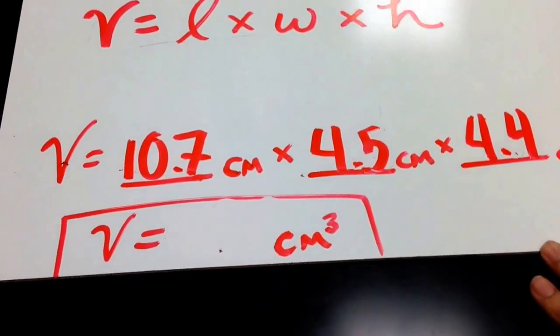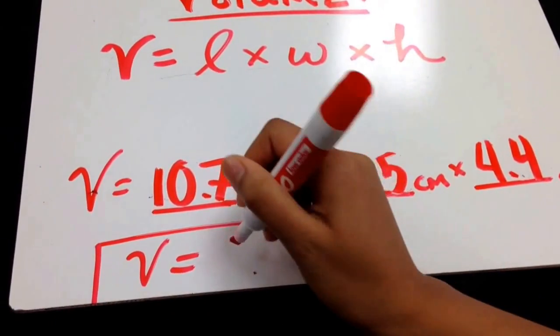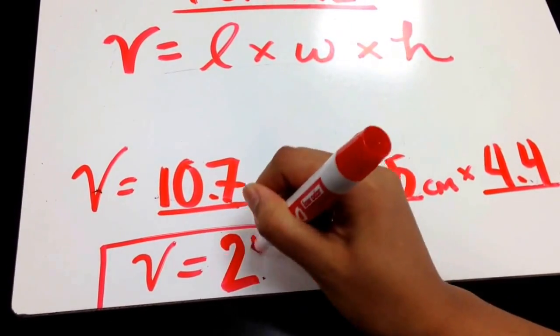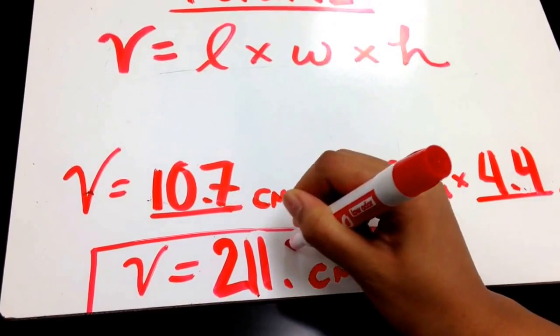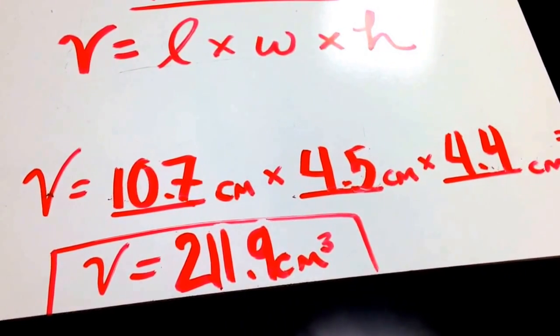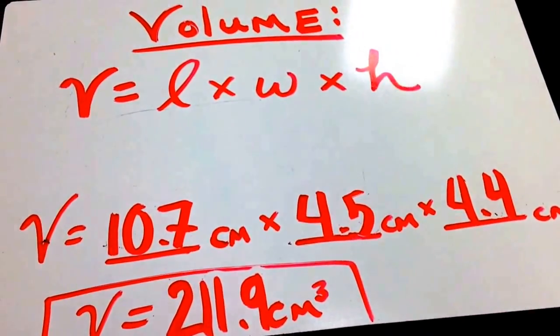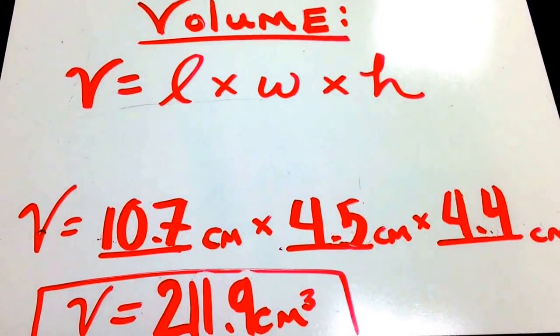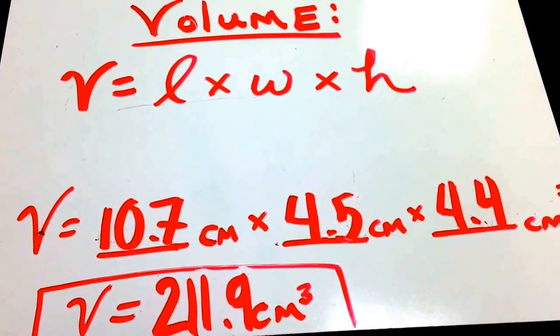When we multiply the length times width times height, the final answer obtained is 211.9 cubic centimeters. And this is how you measure the volume of a regularly shaped object.